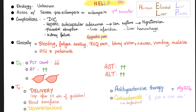Complications of HELLP syndrome: it can lead to DIC. Hepatic subcapsular hematoma, which might rupture causing severe sudden hypotension. Also liver infarction or liver hemorrhage. Placental abruption and kidney failure. Placental abruption is also one of the causes of DIC. So HELLP syndrome can cause DIC directly, or HELLP can cause placental abruption, which then causes DIC. Remember the definition of preeclampsia/eclampsia includes hypertension, proteinuria, and end organ damage.